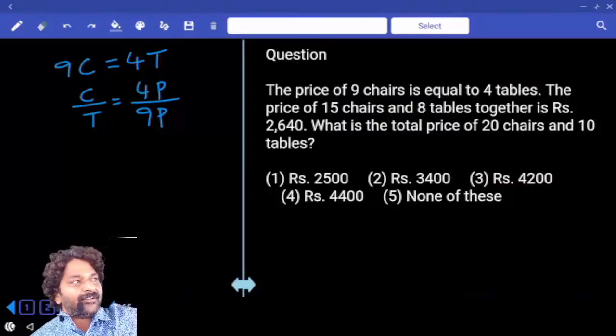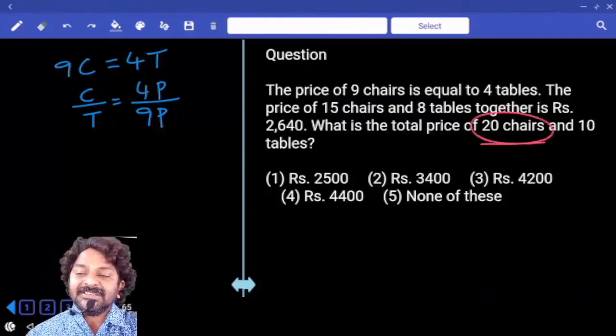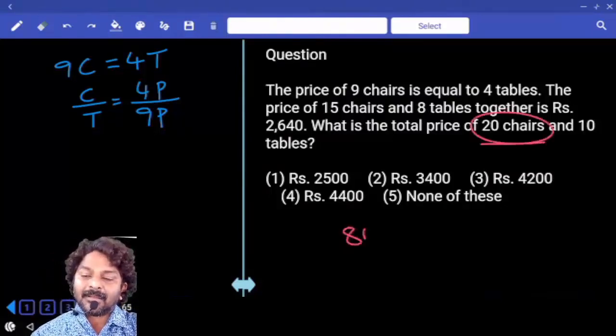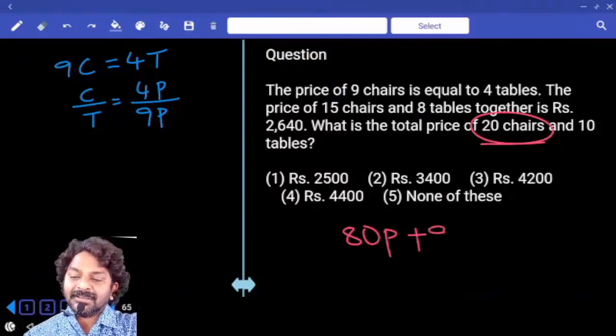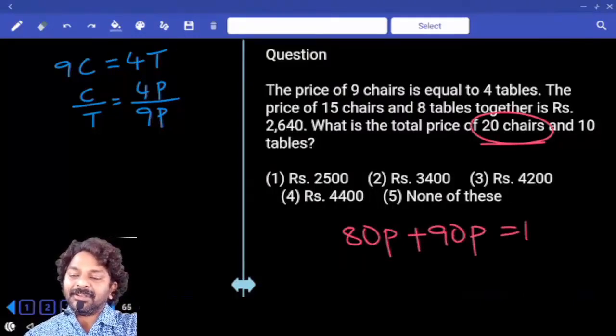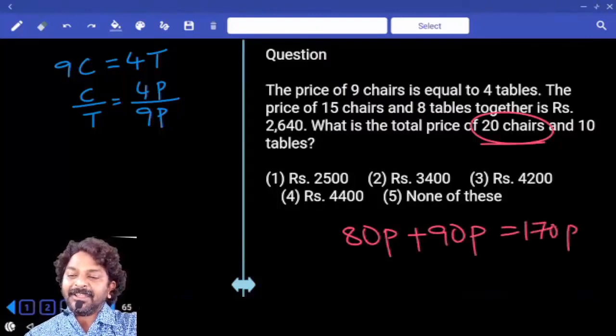What is cost of 1 chair? 4 parts. 20 chairs? 80 parts. What is cost of 1 table? 10 tables? 90 parts. Then total we need to calculate 170 parts, right?